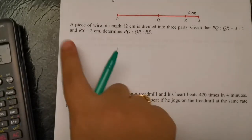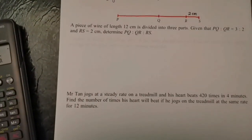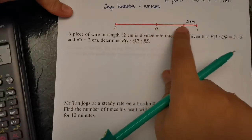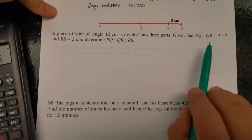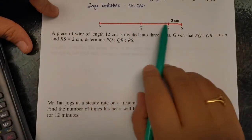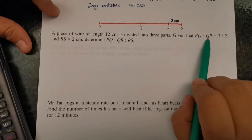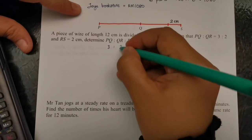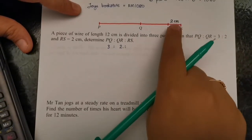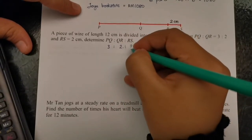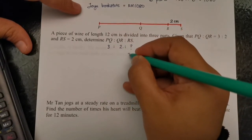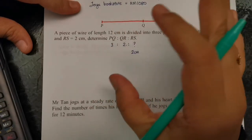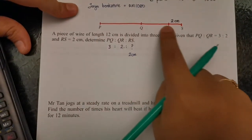A piece of wire length 12 cm is divided into 3 parts: PQ, QR, and RS. The ratio of PQ to QR is 3:2, and RS is given as 2 cm. We know the value but not how many parts RS is. The whole length is 12 cm, this is 2 cm, so the remainder is 10 cm.